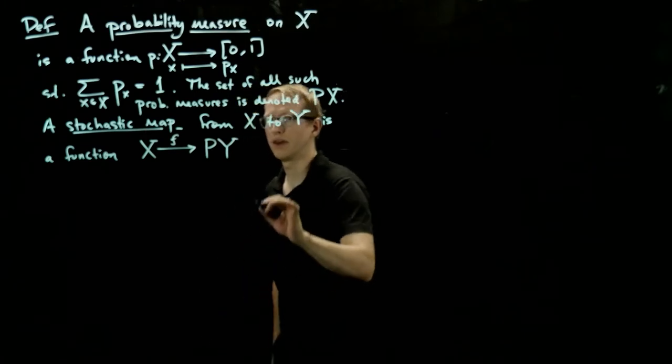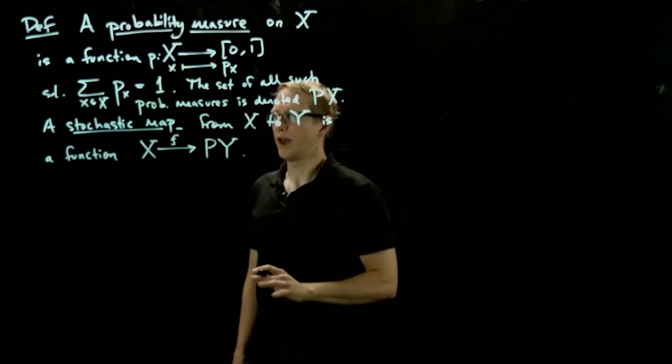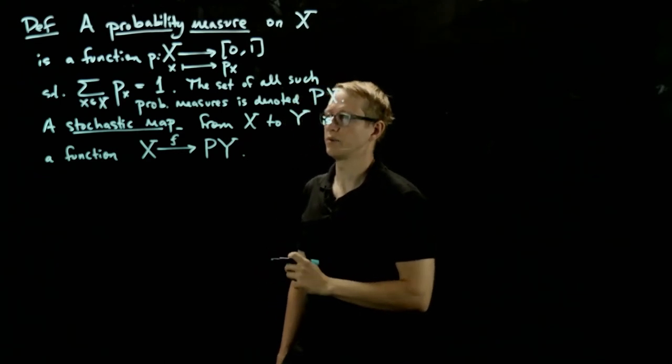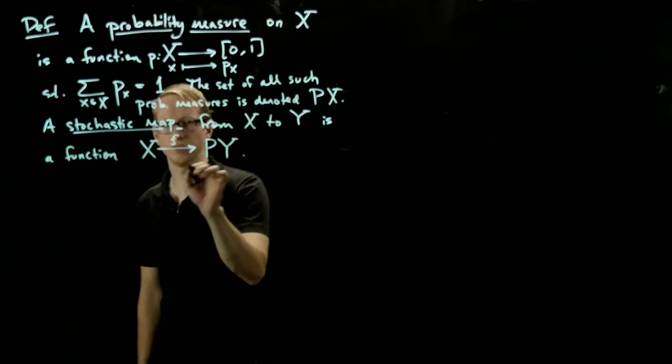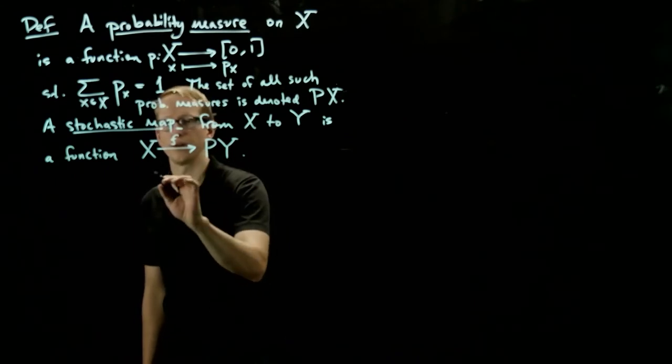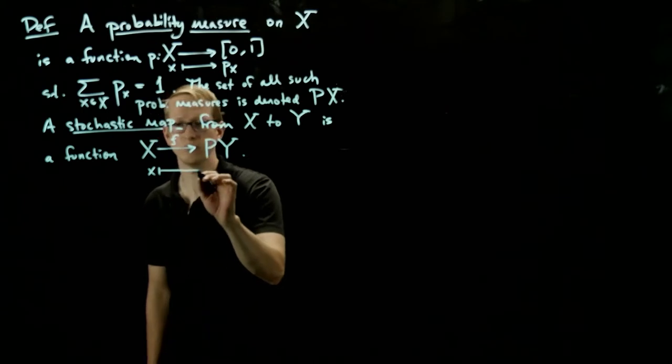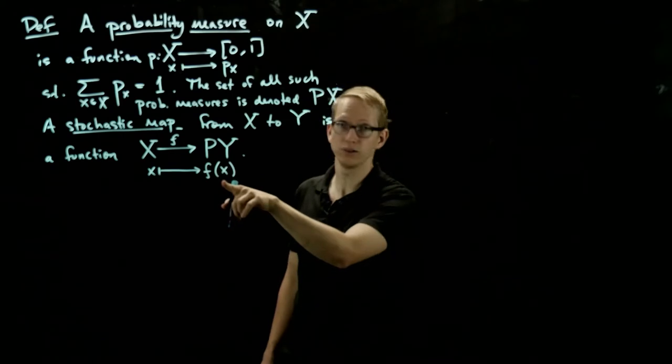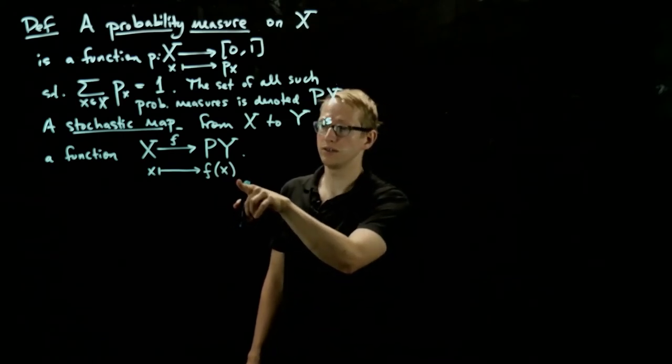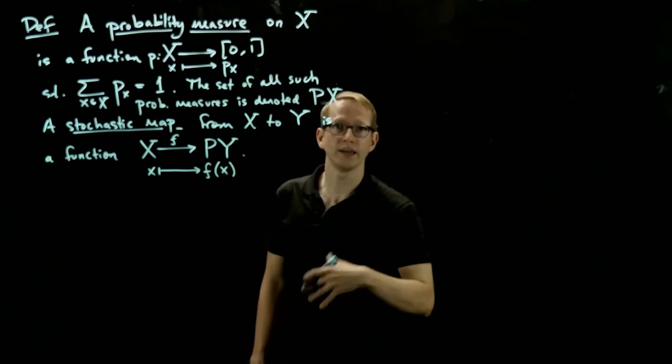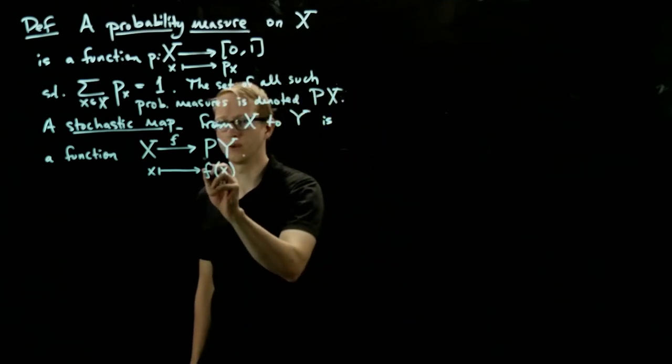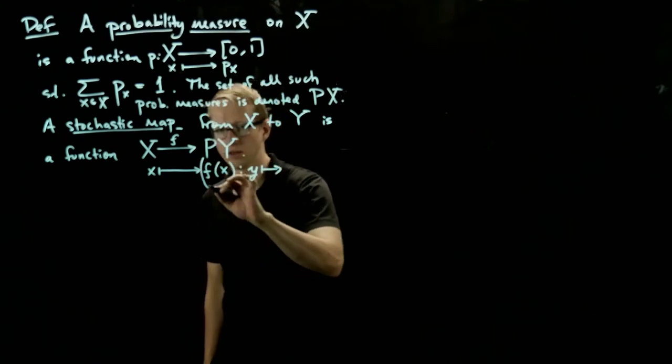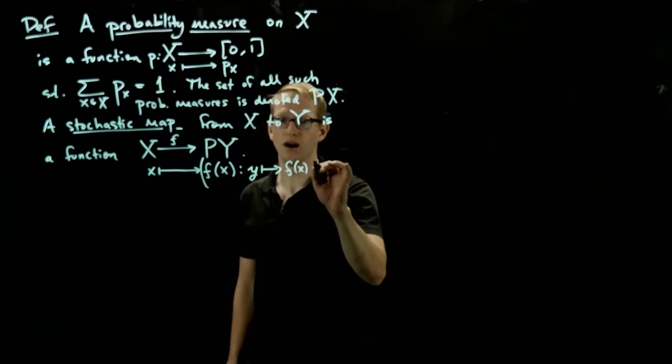Let's call that f. We're going to introduce a convenient notation for such stochastic maps. So first, let's explain a convenient notation for how to write f. If we take an element x and apply it, we'll get a probability measure on Y. For now, let's call this f of x. Because this is a probability measure, it takes an element y in Y and gives me a number between 0 and 1. So this takes an element y and maps it to f of x of y.